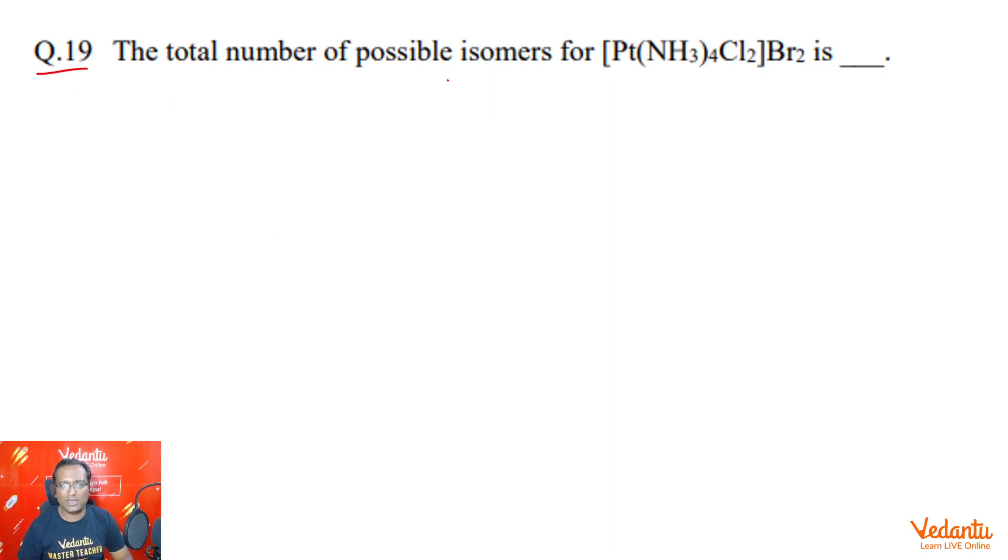This question says total number of possible isomers of Pt(NH3)4Cl2Br2. First thing to notice here is that it will not just form optical or stereo isomers, it will also form structural isomers.